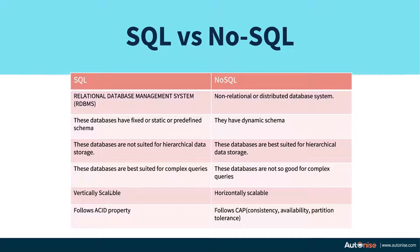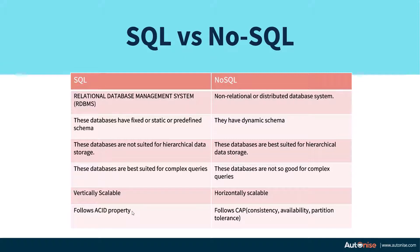SQLs are vertically scalable. NoSQLs are also vertically scalable but they are horizontally scalable as well, which is a really big advantage. SQLs can also be made horizontally scalable but there are no good implementations, and implementing it yourself can introduce a lot of bugs. SQL databases follow the ACID property — a set of guidelines — while NoSQL databases follow the CAP properties, which we'll look at in the upcoming slides.